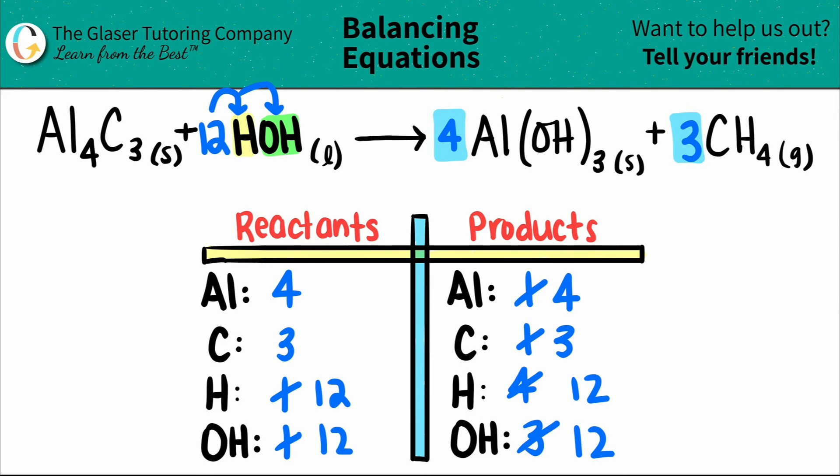Now, if you want, you could turn this back into water by saying that it's plus 12 H2O, but it's the same exact idea. Okay. So in this balanced equation, I have one Al4C3 plus 12 H2Os, and that will produce four aluminum hydroxides, Al(OH)3, and then plus three methanes, three CH4s.